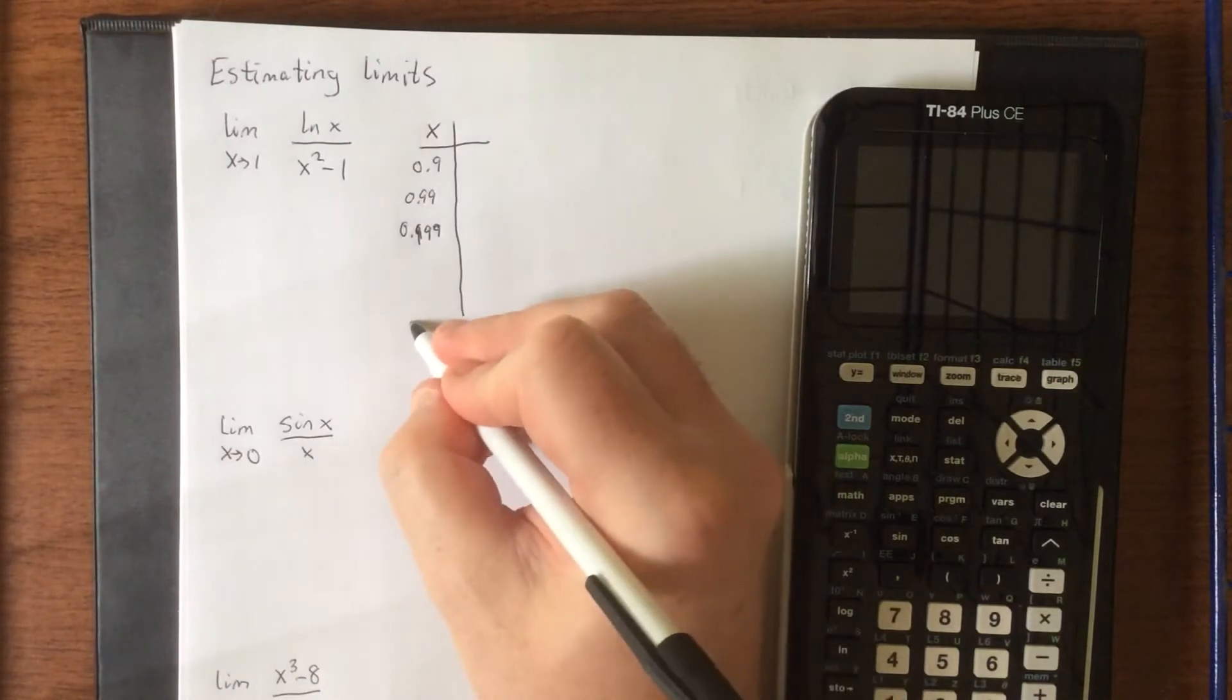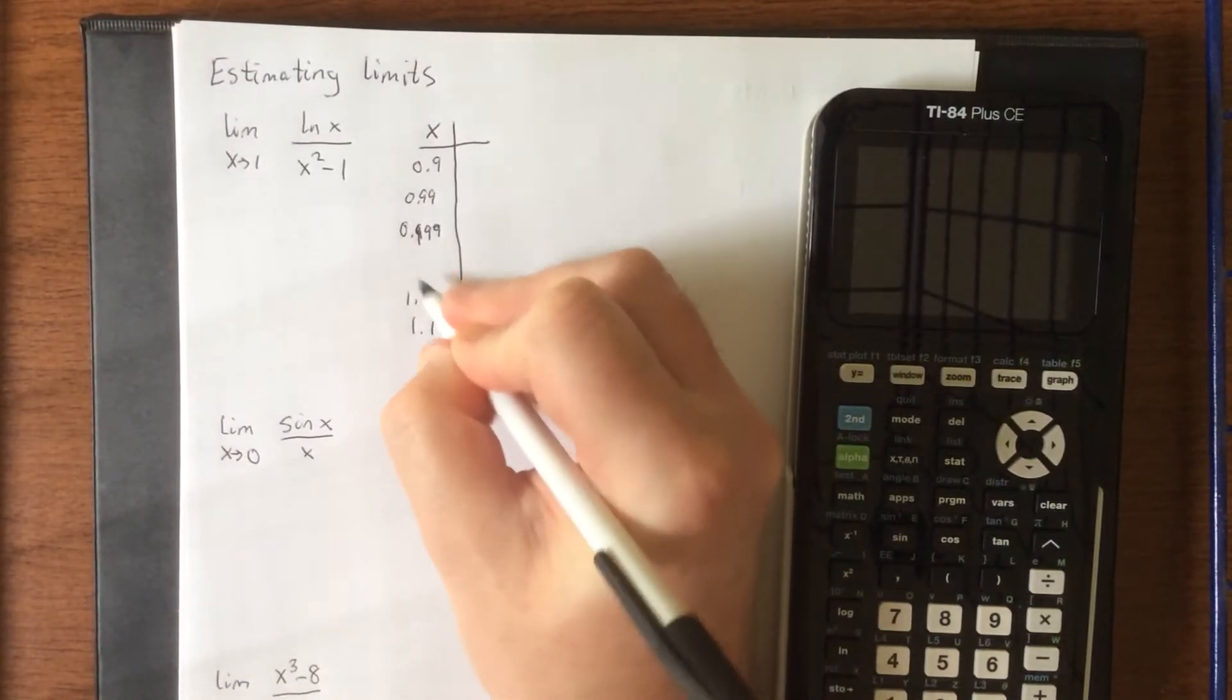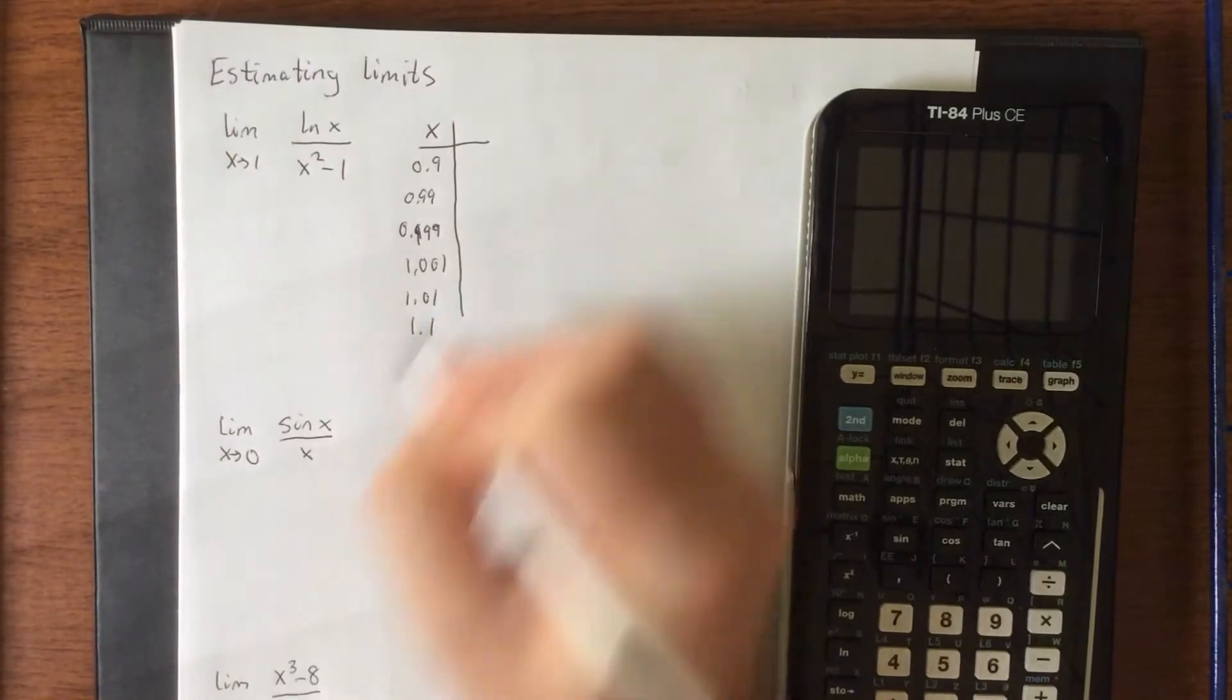On the flippy flip, use values like 1.1, 1.01, and 1.001.